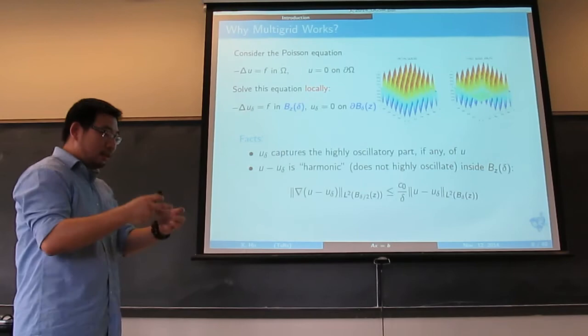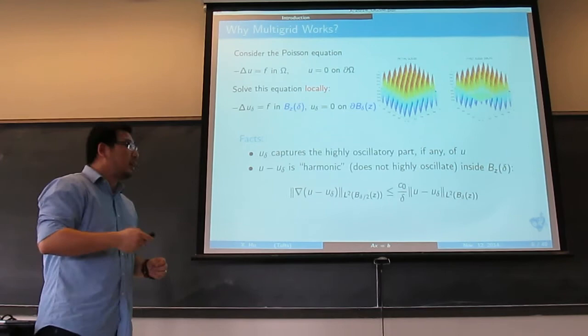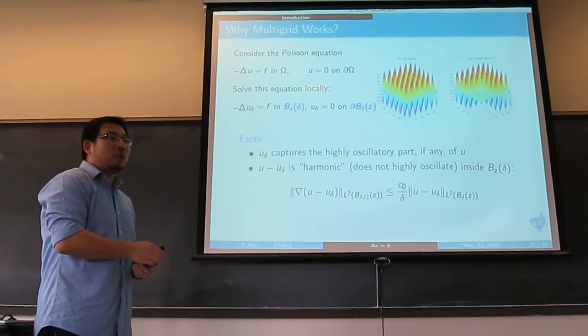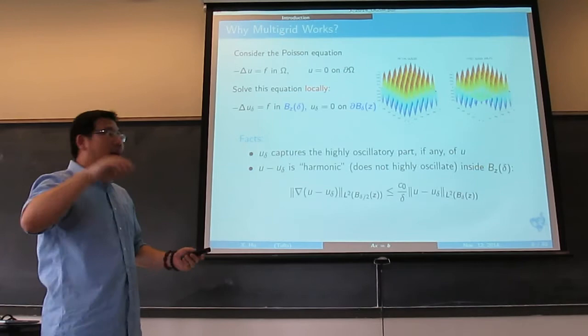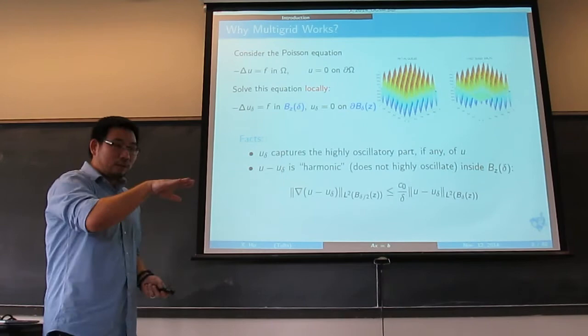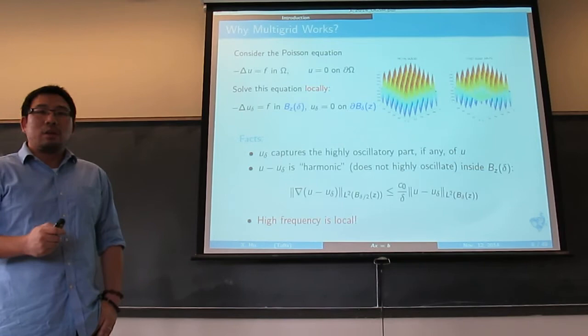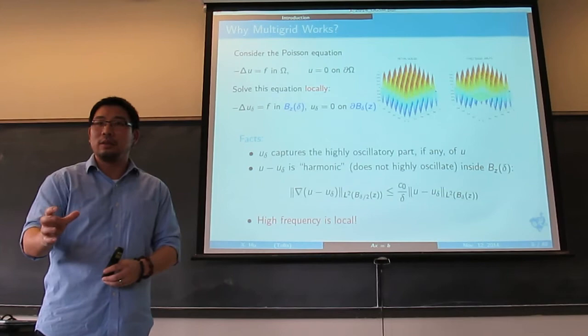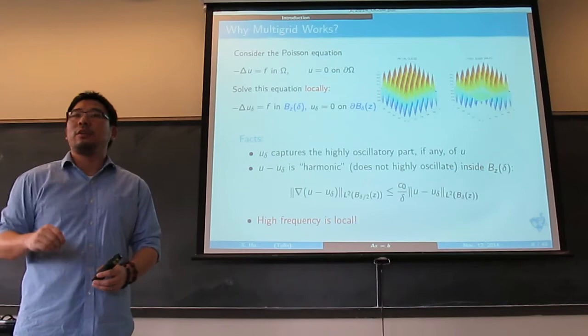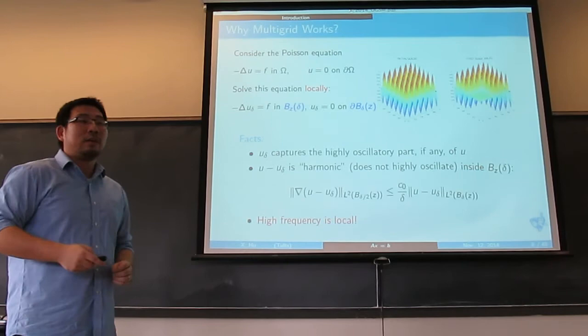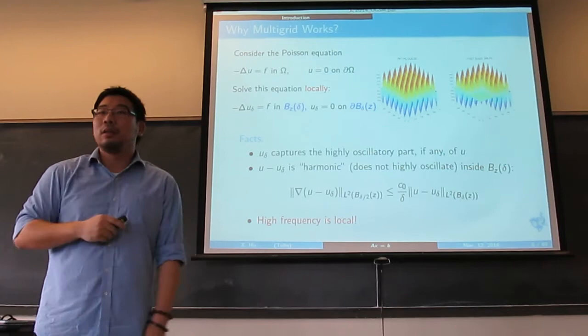There is an inequality called Harnack's inequality. It tells you that if U minus U-local on the small subdomain is harmonic, its gradient can be bounded by its value — the function itself. Suppose you have oscillatory functions, the gradient cannot be bounded. But only for smooth functions can you bound the gradient by its value. This tells you that U minus U-local, the difference when you solve the local problem, is almost a harmonic function. The message is: multigrid works because the high frequency is local.